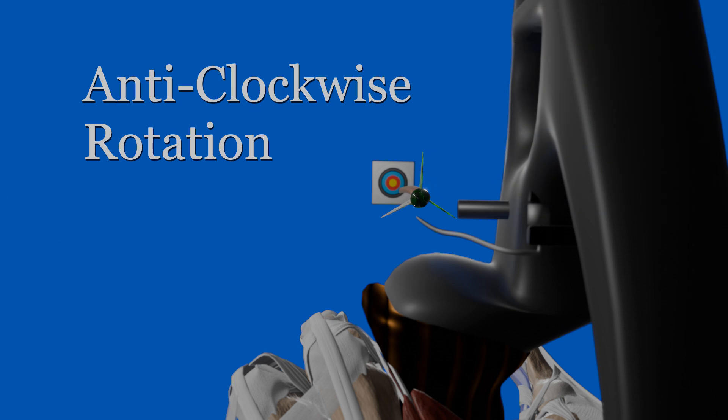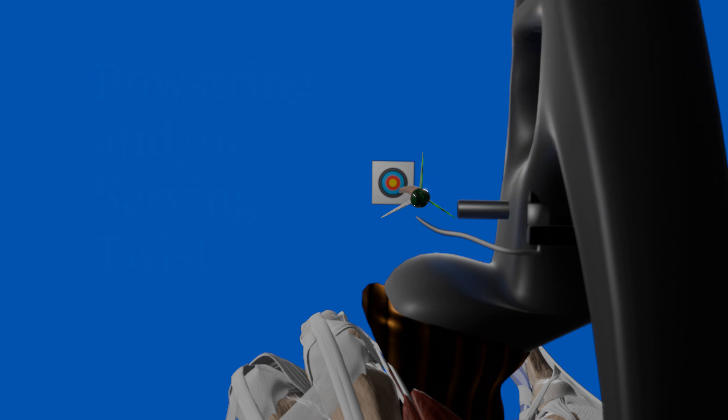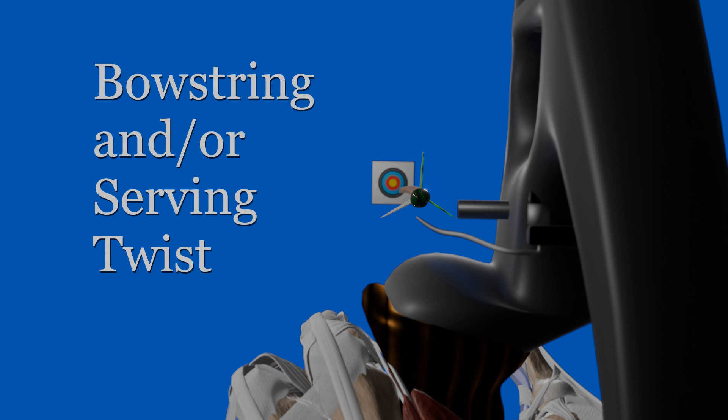The standard explanation for arrow clocking is the rotation in the bowstring and or the serving. No mechanism for this causation is offered, as far as I can determine. Evidence appears anecdotal at best. I am dubious that this is more than independent observations. Furthermore, there is a more logical explanation, albeit less simple.